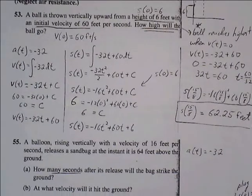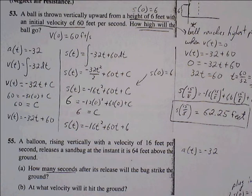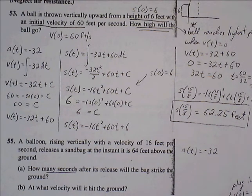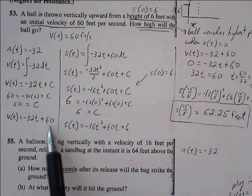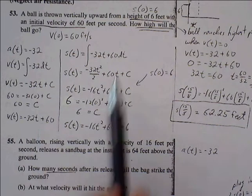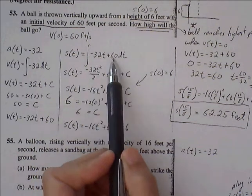So once we have our velocity equation, we're going to continue to find the anti-derivative to get to our position function. So the anti-derivative of velocity is position. Here's the anti-derivative of velocity.